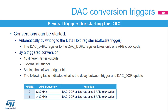DAC output conversion is started by writing to the data hold register using software. Ten different timer outputs and an external I/O or software can trigger a DAC conversion. When a software trigger is used, the content of the data hold register is transferred to the corresponding data output register after one APB clock cycle. When a trigger occurs in trigger mode, the transfer happens after three or eight APB clock cycles, depending on the APB clock frequency.